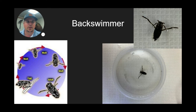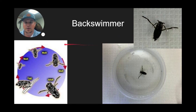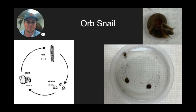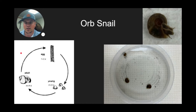We also found a back swimmer — they lay on their backs, kick their legs, and swim all over the pond. Interestingly, when we took this animal out of the water and brought it into the nature center, it actually flew away — I didn't even know these animals could fly before doing this activity. We also found three orb snails; this is a life cycle of a snail — not the exact same snail but similar.